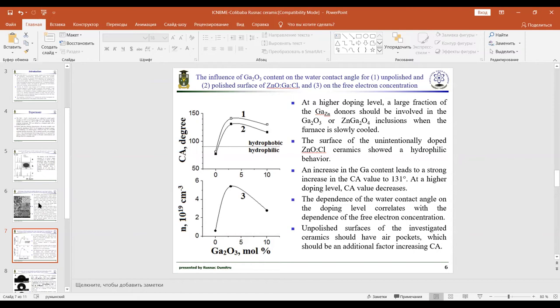The dependence of the water contact angle on the doping level correlates with the dependence of the free electron concentration. It can be assumed that a high concentration of free electrons in zinc oxide doped with gallium and co-doped with chlorine ceramics suppresses the formation of surface defects.